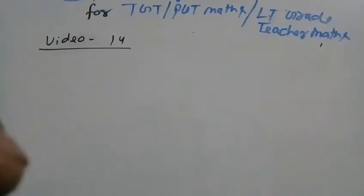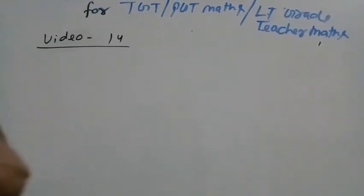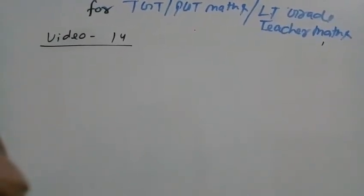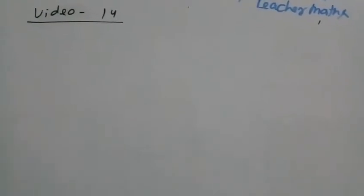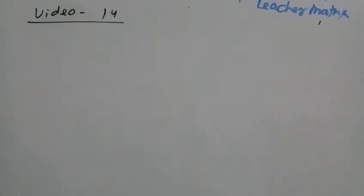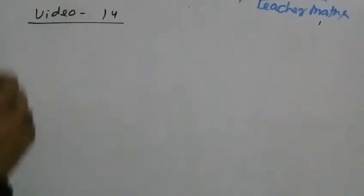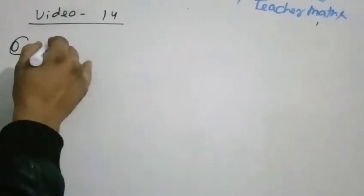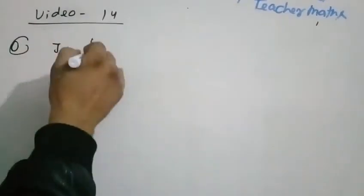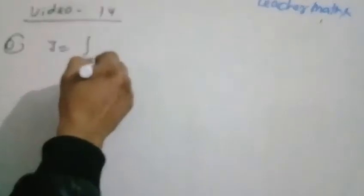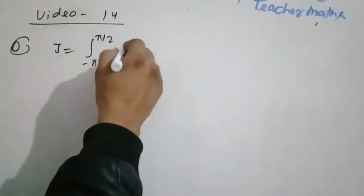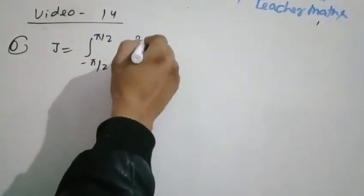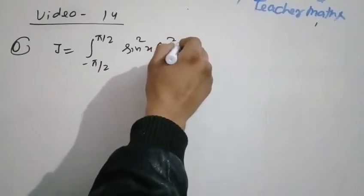Integration for DJ2BJ Mathematics and L degree. This is video number 14. The question is: I equals integration from minus pi by 2 to pi by 2 of sin squared x cos squared x.